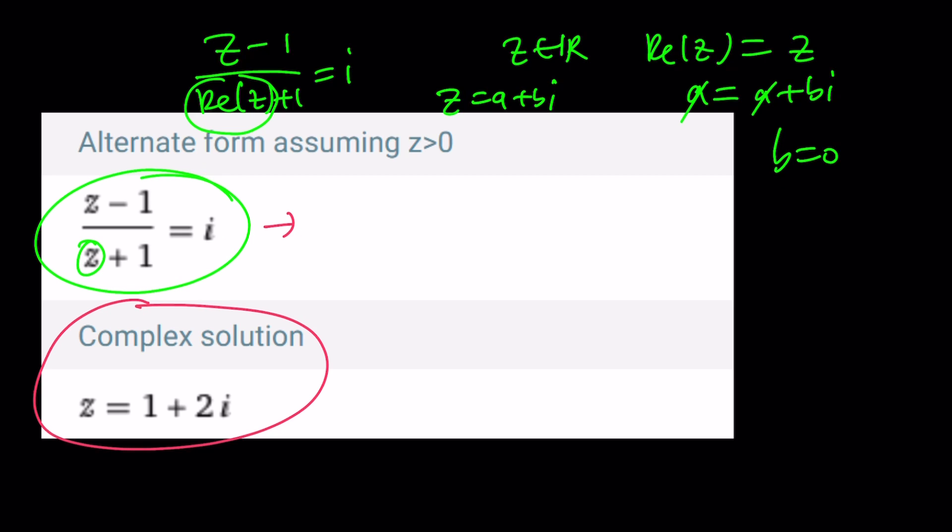And if you go ahead and try to solve it from here, you can cross multiply. Z minus 1 equals ZI plus I. And then from here, you're going to put the Z terms on the same side and then divide by 1 minus I eventually. But guess what? This is not going to be a real number because when you multiply by the conjugates, you're going to be getting 1 plus I times 1 plus I, which is 2I divided by 2. And that'll be I. But as you know, I is not real. Or is it?